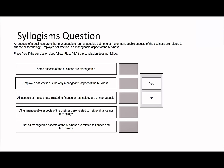This is more for continuous practice so you can expand the ideas that you currently have. So the first question says: all aspects of a business are either manageable or unmanageable. None of the unmanageable ones are related to finance and tech. From that you can gather that the aspects related to finance and tech must be manageable. Employee satisfaction is a manageable aspect of the business.